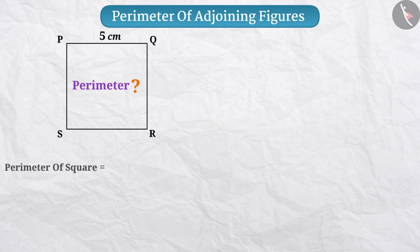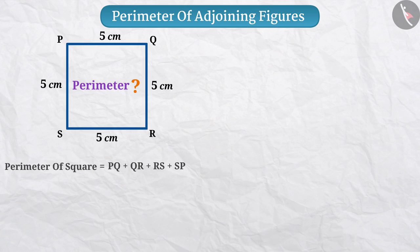To find its perimeter, we have to add the lengths of all its four sides. But all the sides of square are equal. So the perimeter of the square is 4 multiplied by length of a side.